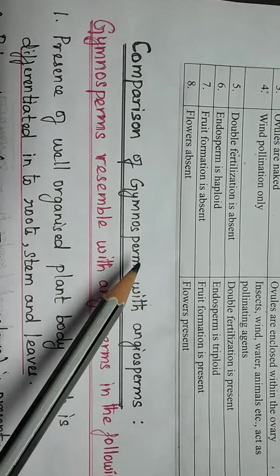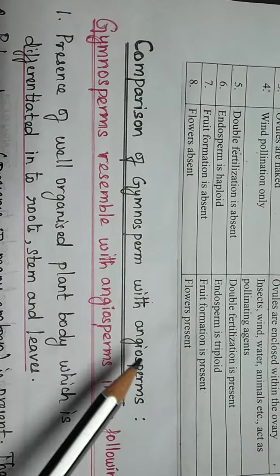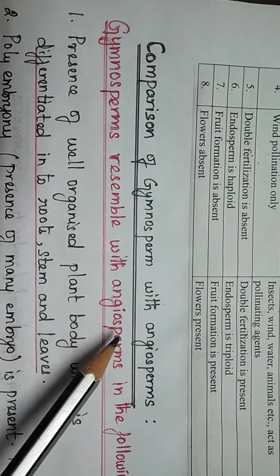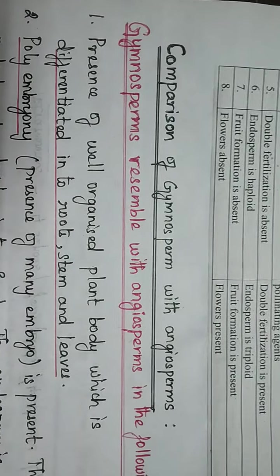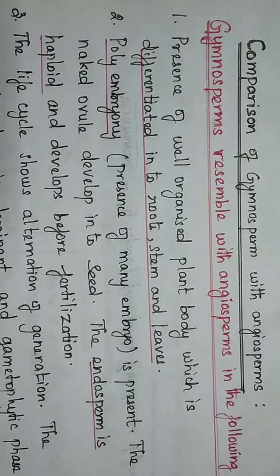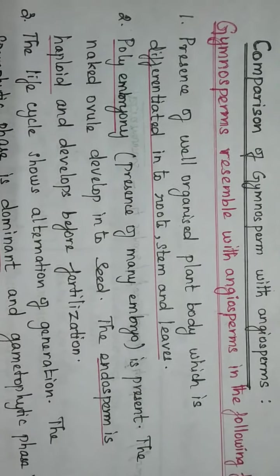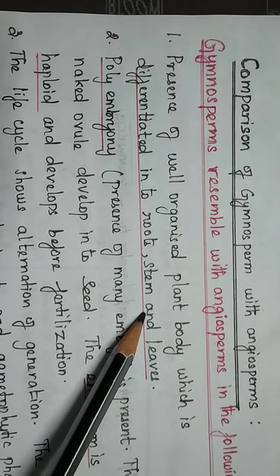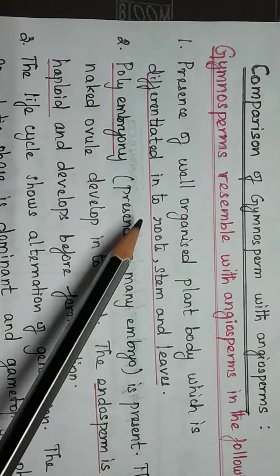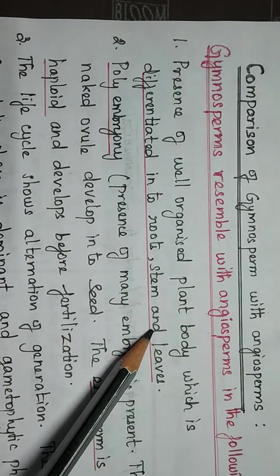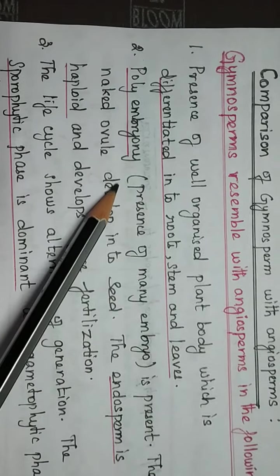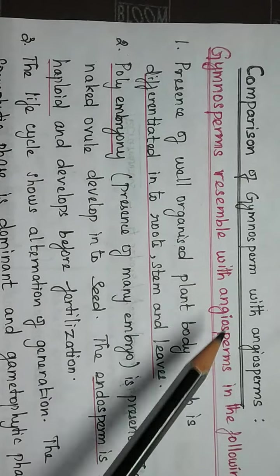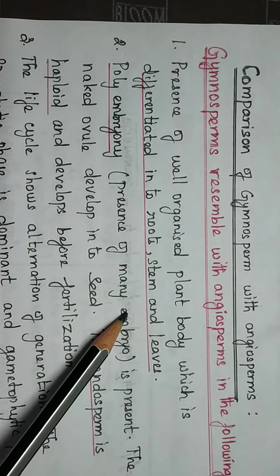Now we can see what is the comparison between gymnosperms and angiosperms — that is, the resemblances. Gymnosperms and angiosperms share the presence of a well-organized plant body differentiated into root, stem, and leaves. Polyembryonic stage is present in both gymnosperms and angiosperms, that is the presence of many embryos.